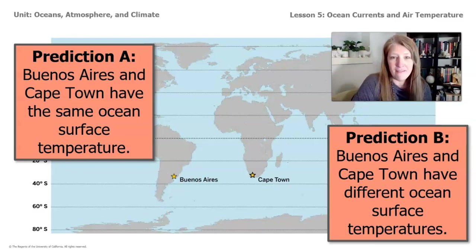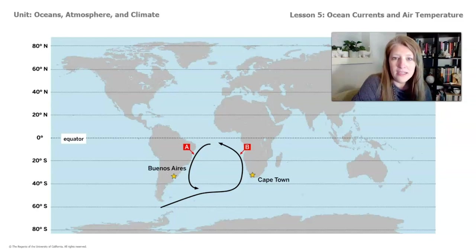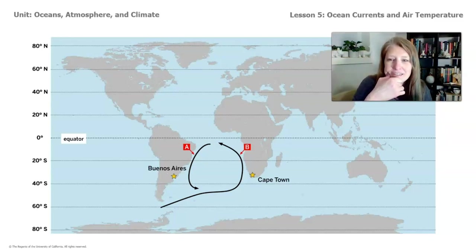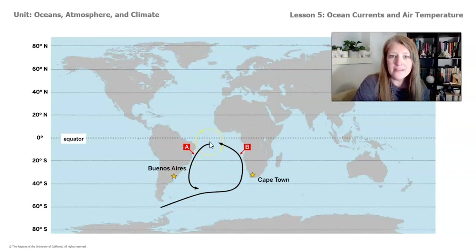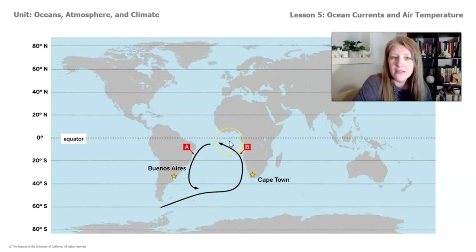Let's take a look at what types of ocean currents are running past these two locations. We have current A and current B. Current A passes right by Buenos Aires, and current B passes by Cape Town. Current A starts near the equator and travels down the coast of South America. Current B seems to start closer to the pole and then moves past Cape Town.